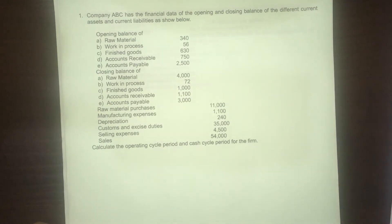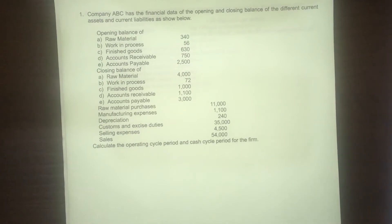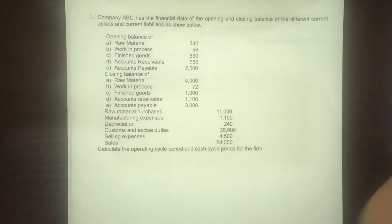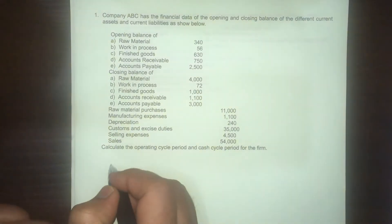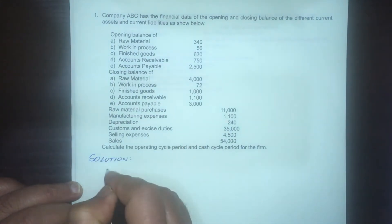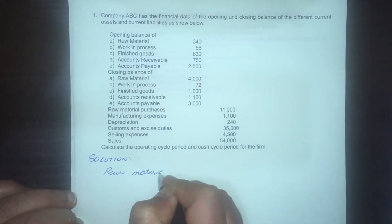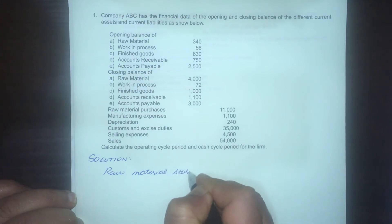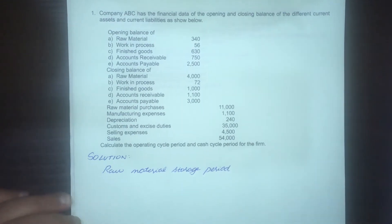Calculate the operating cycle period and cash cycle period for the firm. Before we calculate, we need to find out the different stages of the operating cycle. Number one is to find out what is the raw material storage period.